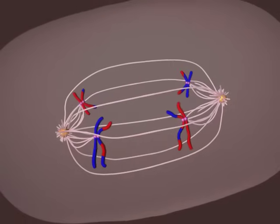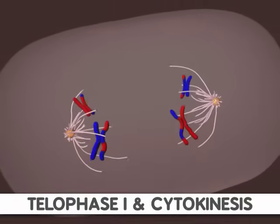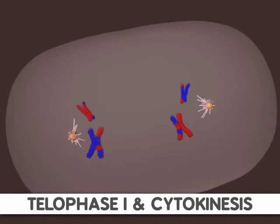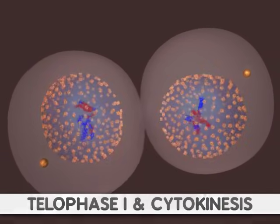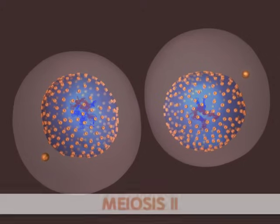The final steps of meiosis I are telophase I and cytokinesis. Here, the cell divides into two daughter cells. Each of these two cells now undergo meiosis II.